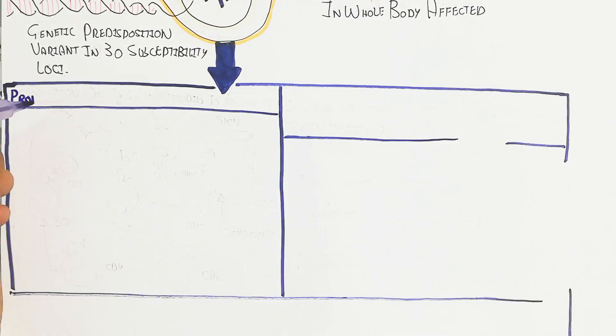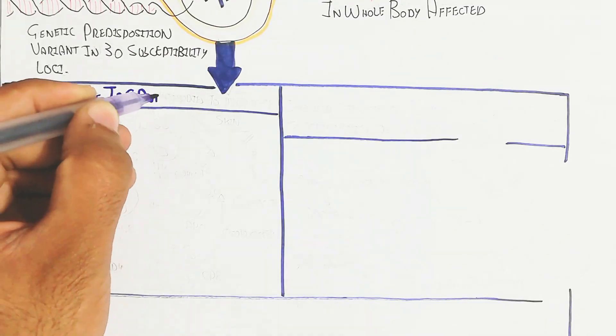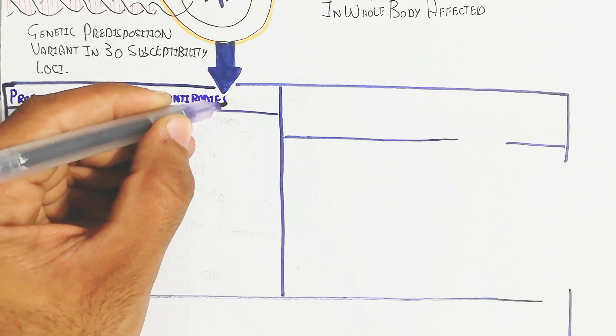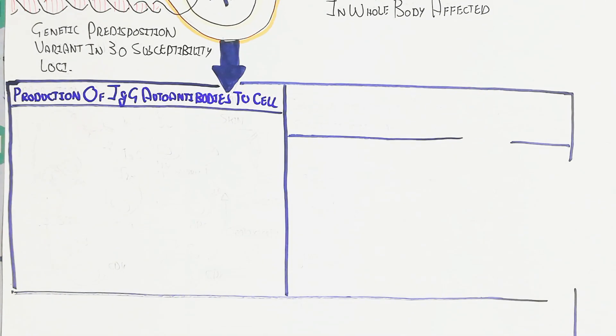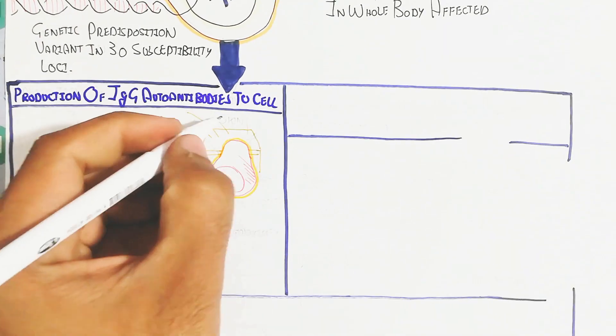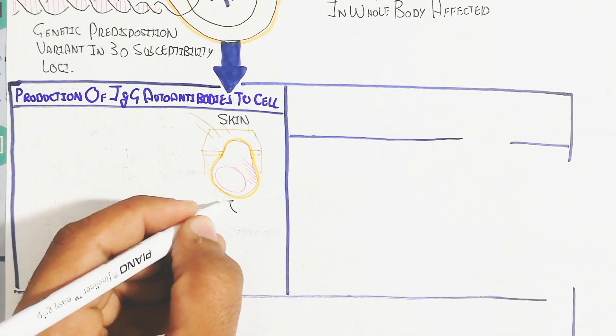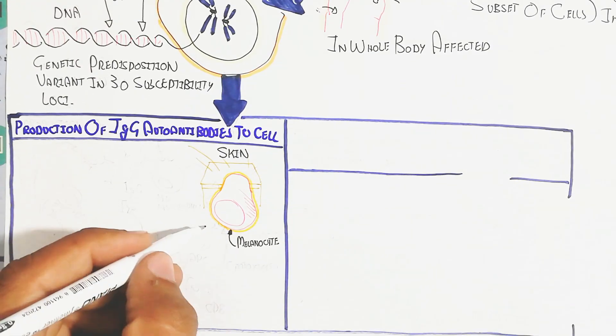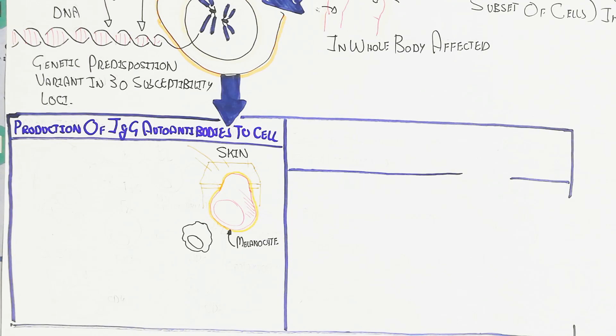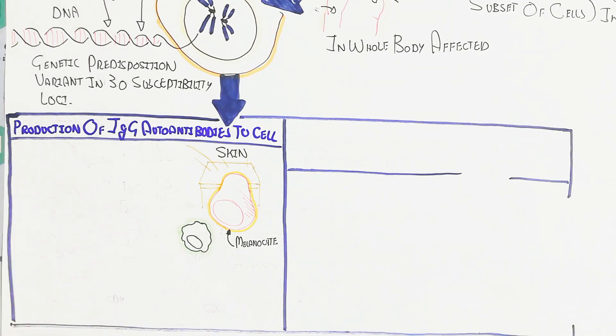This leads to production of IgG antibodies to the cell. The production of IgG antibodies represents immune system activation. The melanocyte auto-antigen is recognized through antigen-presenting cells.